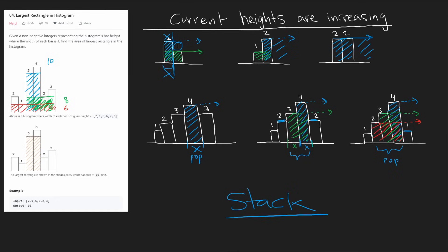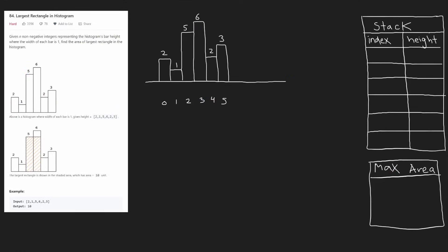The stack will contain the current heights we are considering, and we'll pop them from the top when we are no longer considering them. In the stack, I'm not just going to hold the index, and not just the height — I'm going to hold both at the same time: the start index and the corresponding height. I'm also going to maintain what the max area is so far. Now let's start at the beginning of the array. We get element 2, and since there's nothing in the stack, we can't pop anything — let's just add it. So at index 0, we have a height of 2.